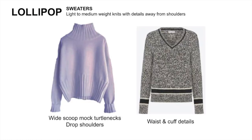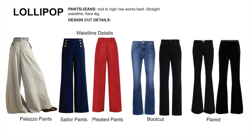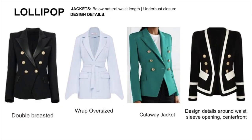For sweaters, go with light to medium weight and shift focus away from broad shoulders and busts. For pants and jeans, mid to high rise works best for the short waist and long torso — make sure it's not nipped at the waist. Use flare leg openings to balance the wide shoulders. For jackets, go below the waist to hip length to narrow the broad shoulders and elongate the short waist.